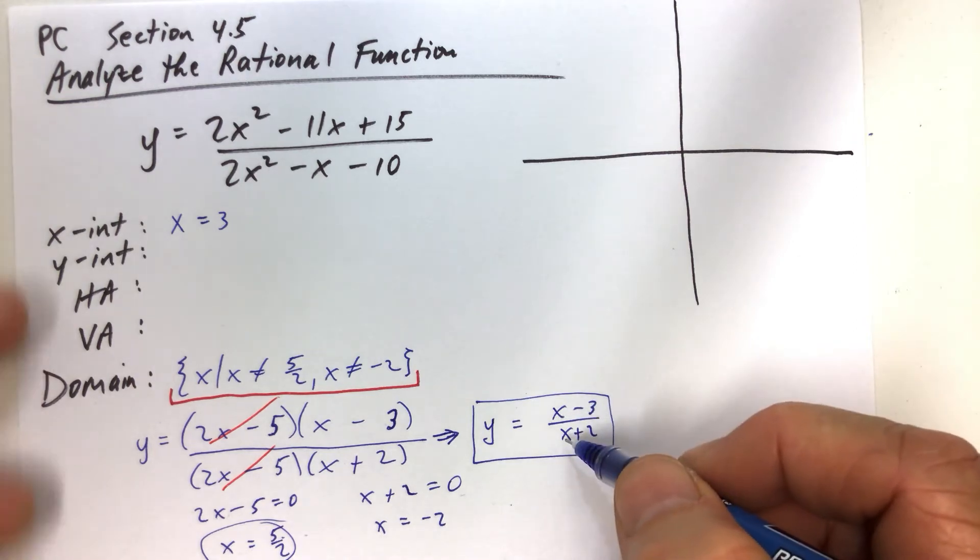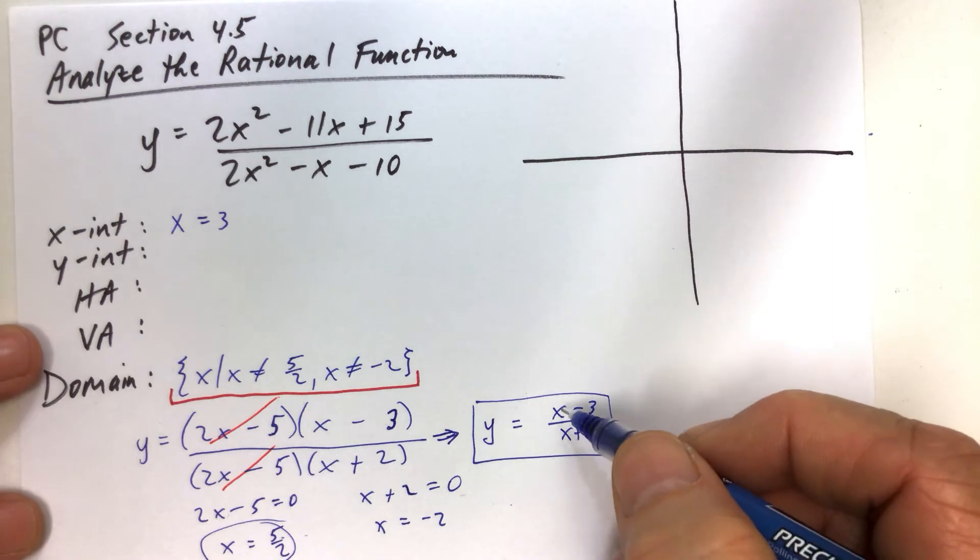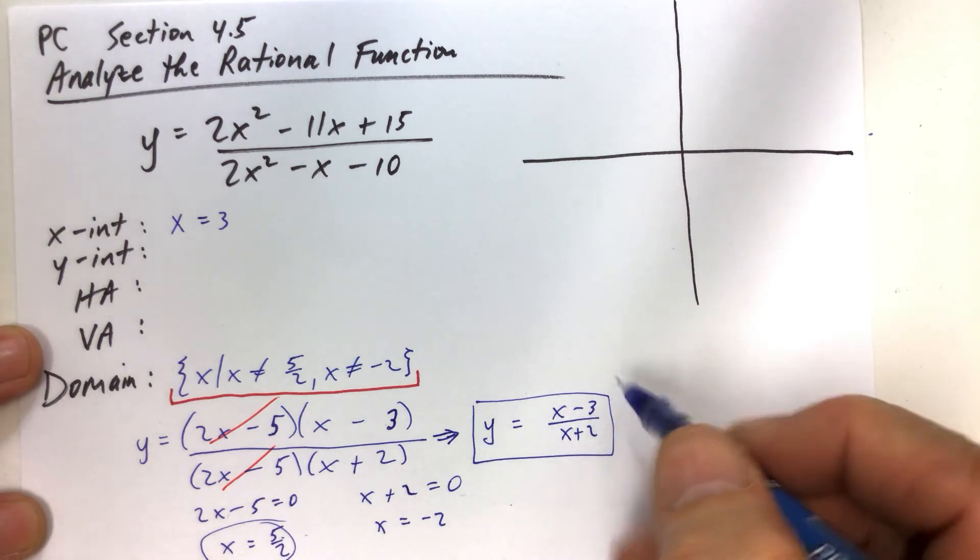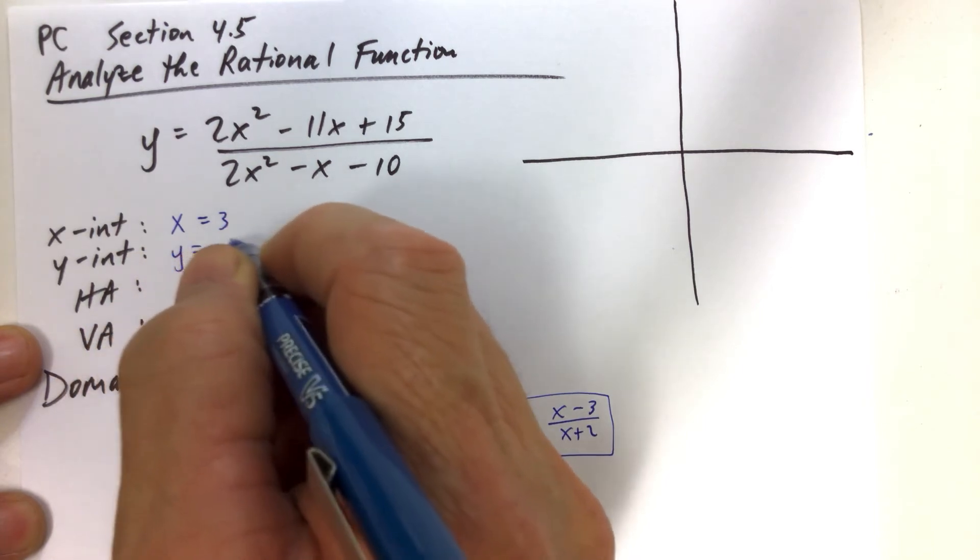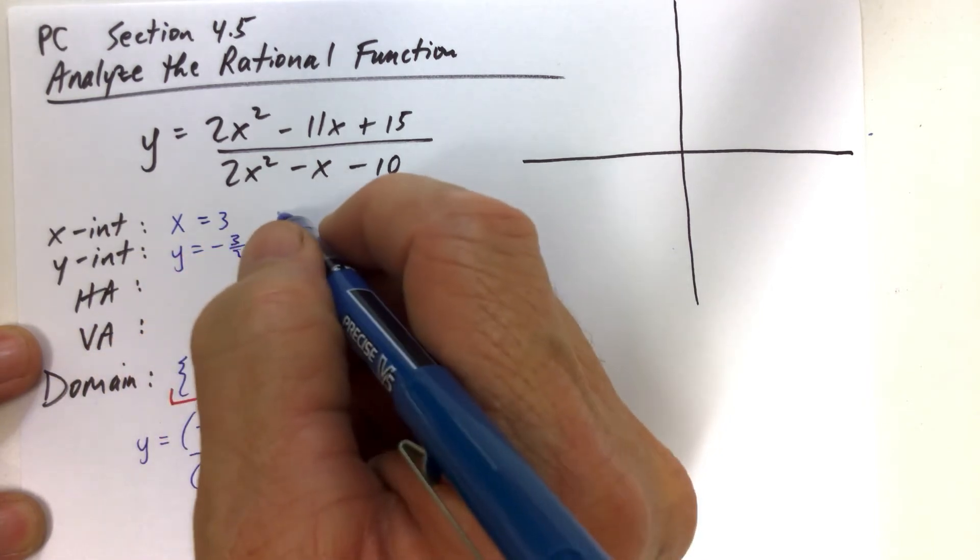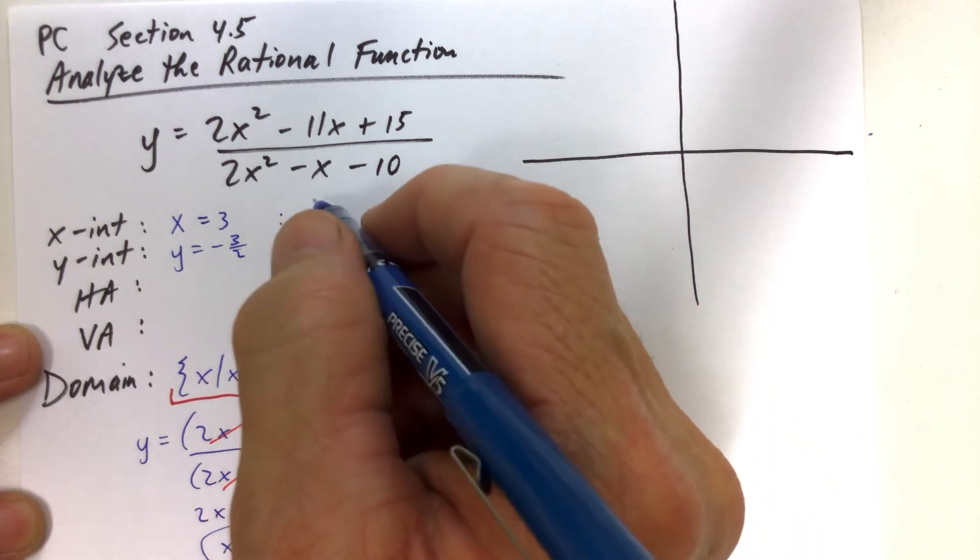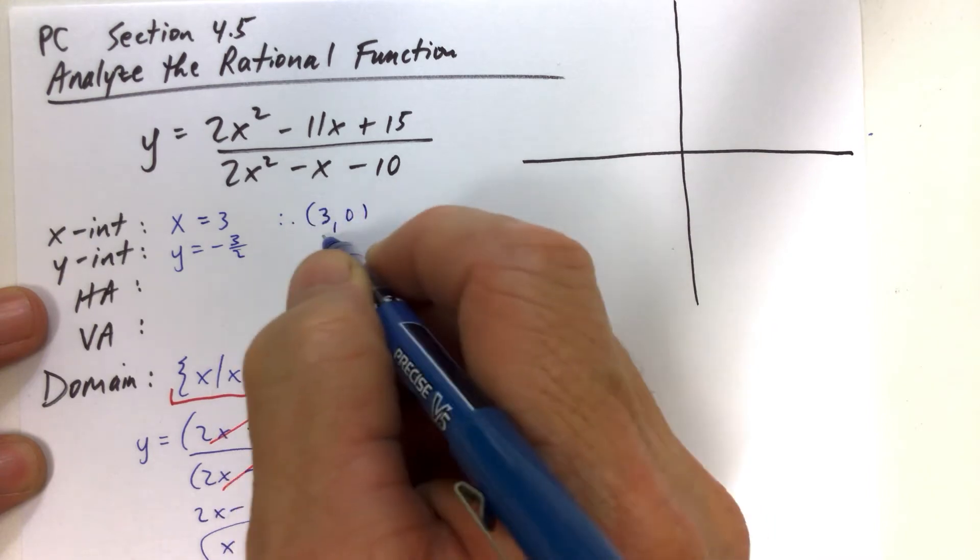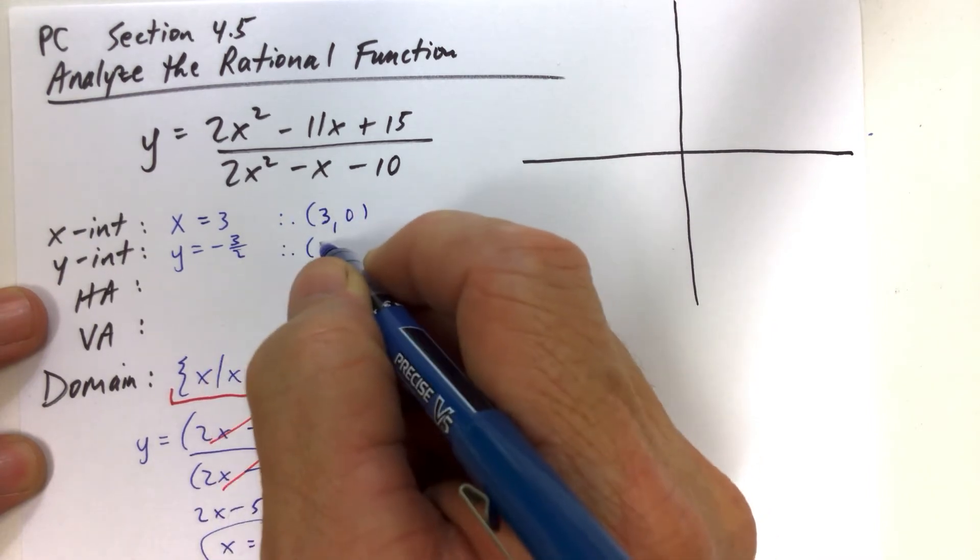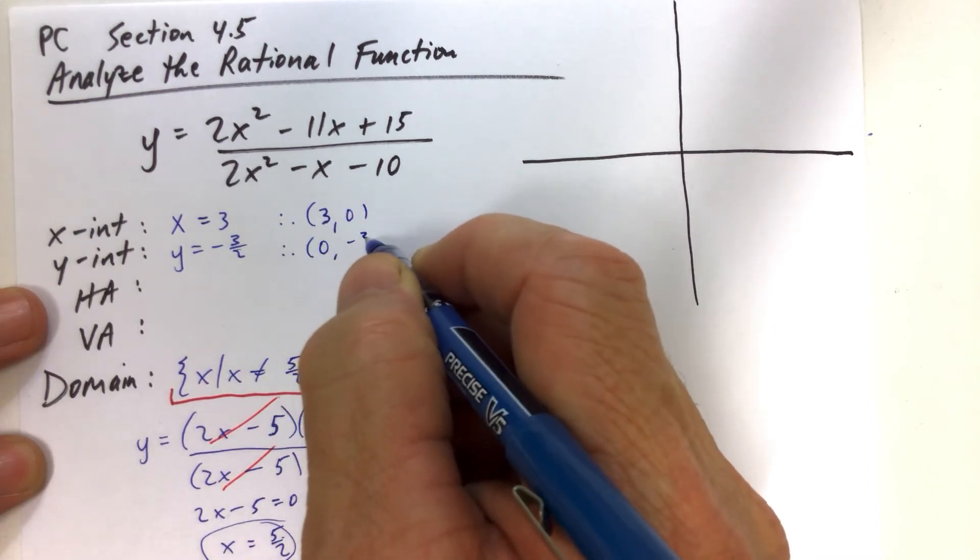Well, what happens when we let x equal 0? That's when we want to find the y-intercept. When x equals 0, we get 0 minus 3 over 0 plus 2. That's negative 3 halves. So we have y equals negative 3 halves. But remember, we always want to write these intercepts in terms of ordered pairs. So when x is 3, y is 0. And when x is equal to 0, y is equal to negative 3 halves.